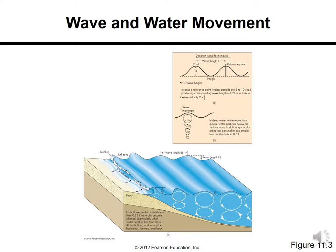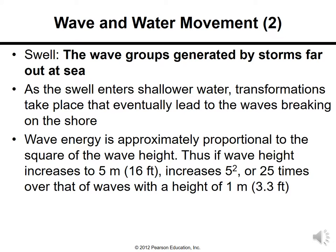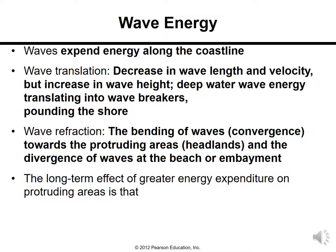When waves enter the coastal zone and shallow water, they impinge on the bottom and become steeper. Wave steepness is the ratio of wave height to wavelength. As swell — wave groups generated by storms far out at sea — enters shallower water, transformations take place that eventually lead to waves breaking on shore. Wave energy is approximately proportional to the square of the wave height. Wave translation means a decrease in wavelength and velocity but an increase in wave height.